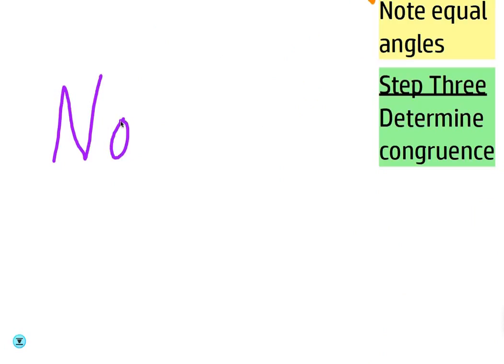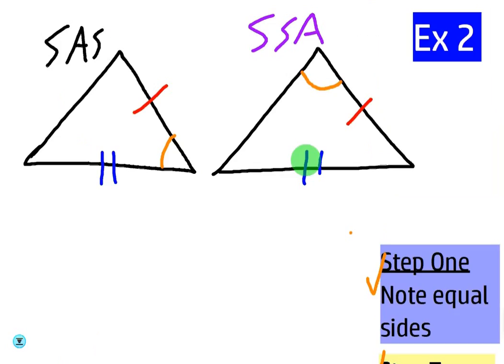Wait. Why wouldn't it be side, angle, side? Because this angle right here is not in between the two sides. So it would be SSA. So now I got you. Okay. Well, I was going to say –